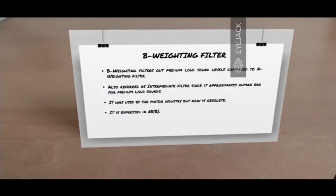The B weighting filter filters out medium loud sound levels compared to the A weighting filter. It is also referred to as the intermediate filter, since it approximates human hears for medium loud sounds. It was used by the motor industry, but now it's obsolete. So, when it was used, it was expressed in dBB.